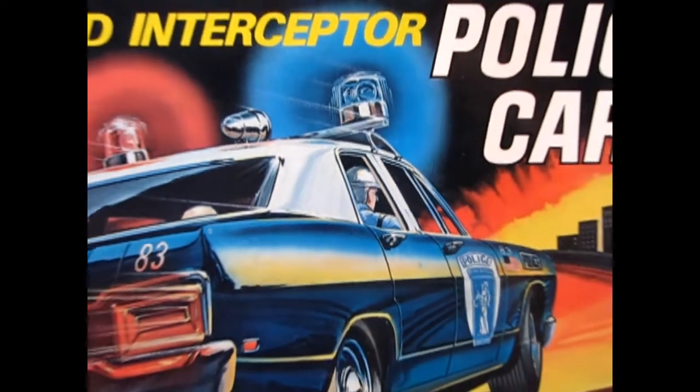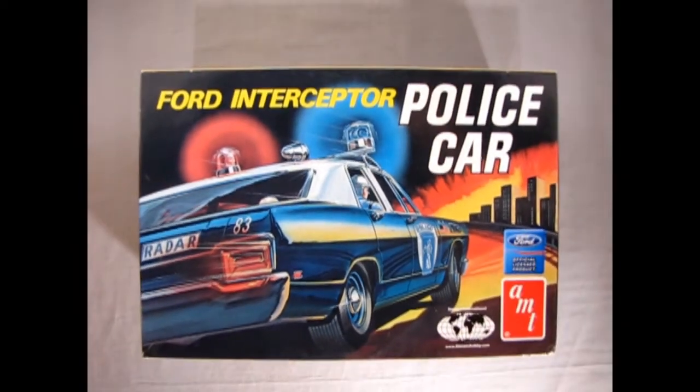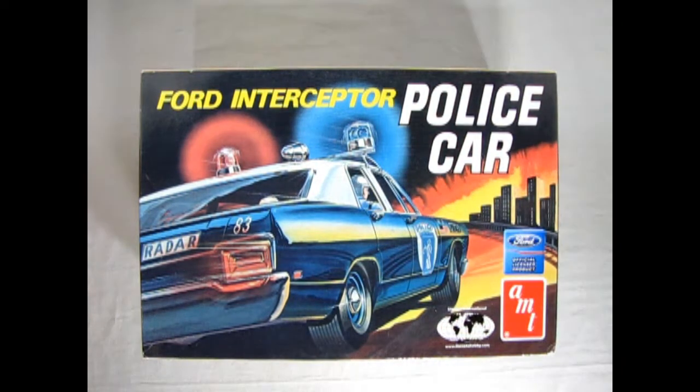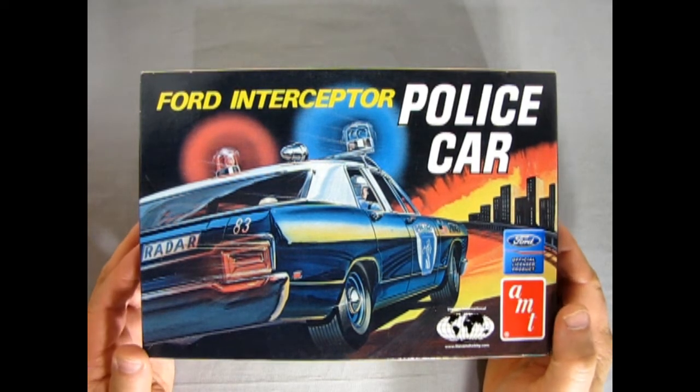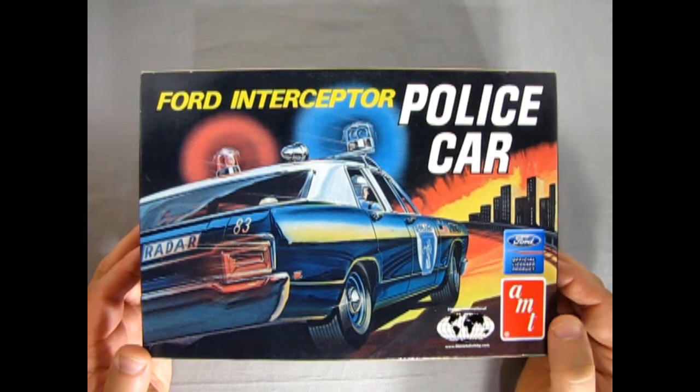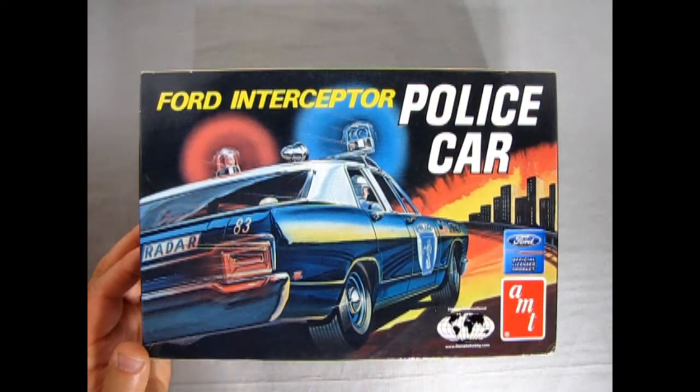Breaker 120, breaker 120, we are in hot pursuit of a 1970 Plymouth Pro Street Super Bird. Car 83, what's your 20? Breaker 17, breaker 17, our 20 is at the table of Monster Hobbies where we're going to open up the lid of this Ford Interceptor police cruiser.